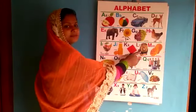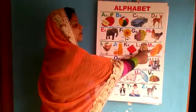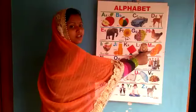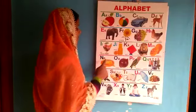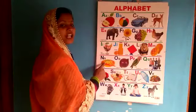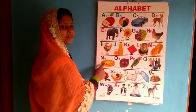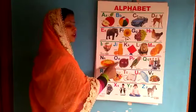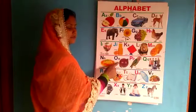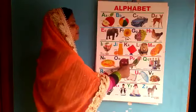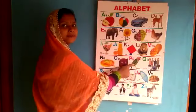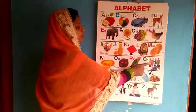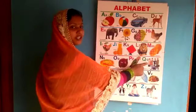K for kite, L for lion, M for mango, N for noodles, O for onion, P for parrot, Q for queen.